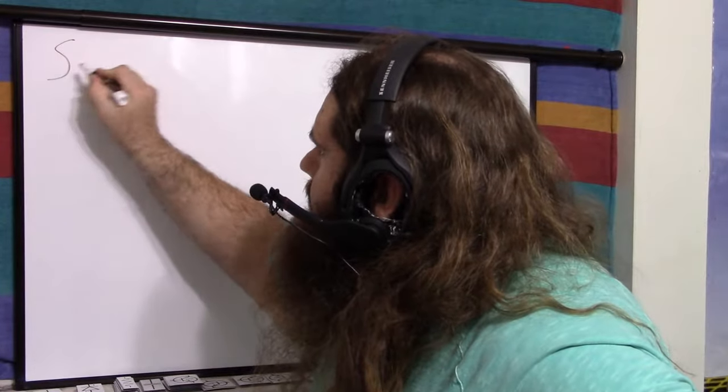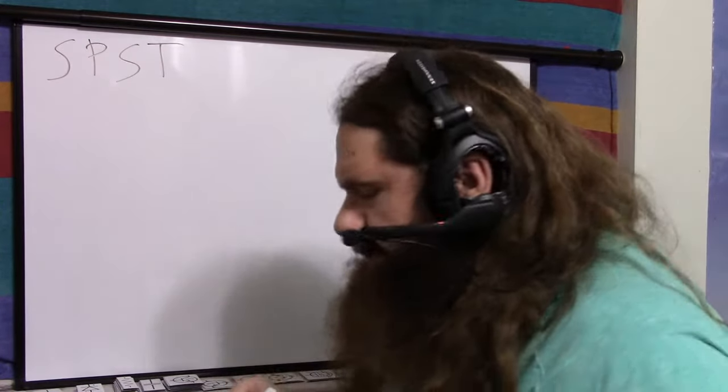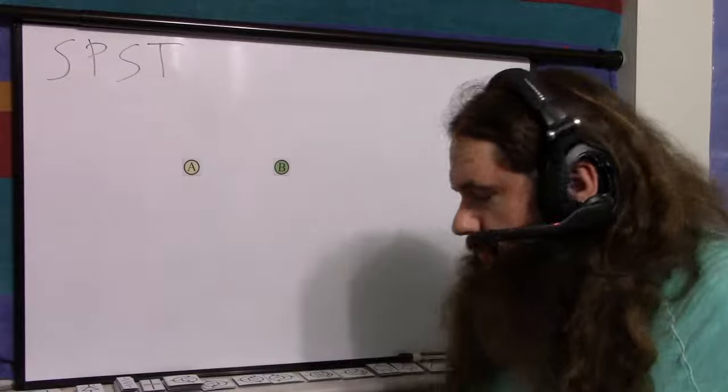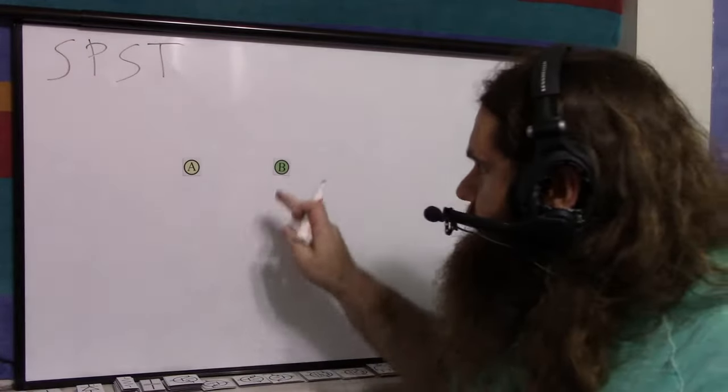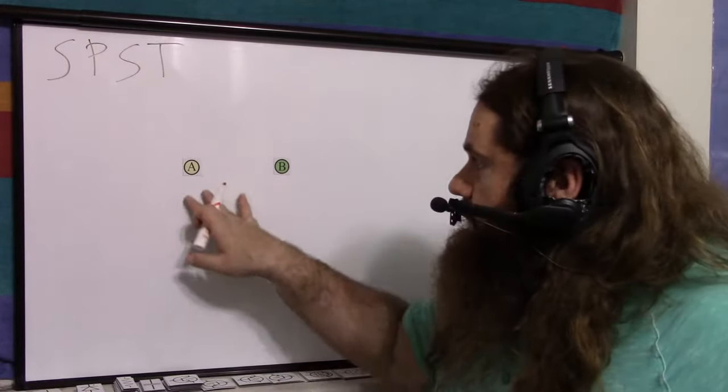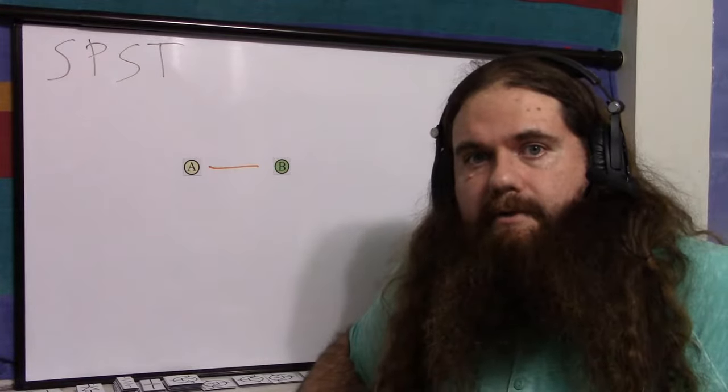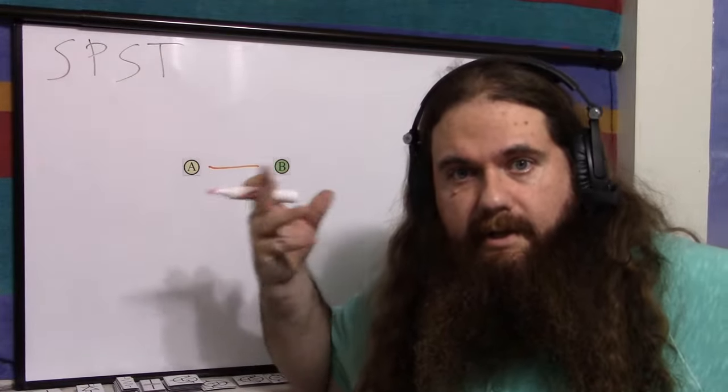So let's begin with SPST. These are your very basic on-off switches. They are two terminals. Let's say this one is A and B. It has two positions. In one position, it's off. There's no connection. In the other position, there's a connection between A and B. So either it's an open circuit or closed circuit, it's an on-off switch. Nice and easy.